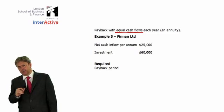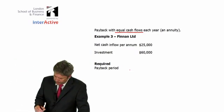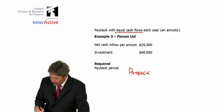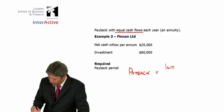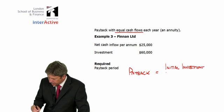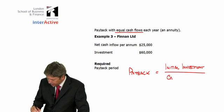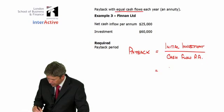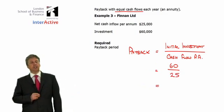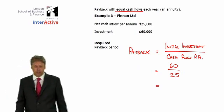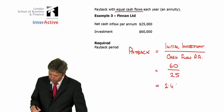If we have equal cash flows each year, like this example, we can calculate payback far more quickly. All we have to do is take the initial investment and divide through by the cash flow per annum, taking advantage of the fact that the cash flows are a constant. So, 60,000 is the initial investment, 25,000 is the cash flow each year, and what we end up with is 2.4 years. Very simple stuff.